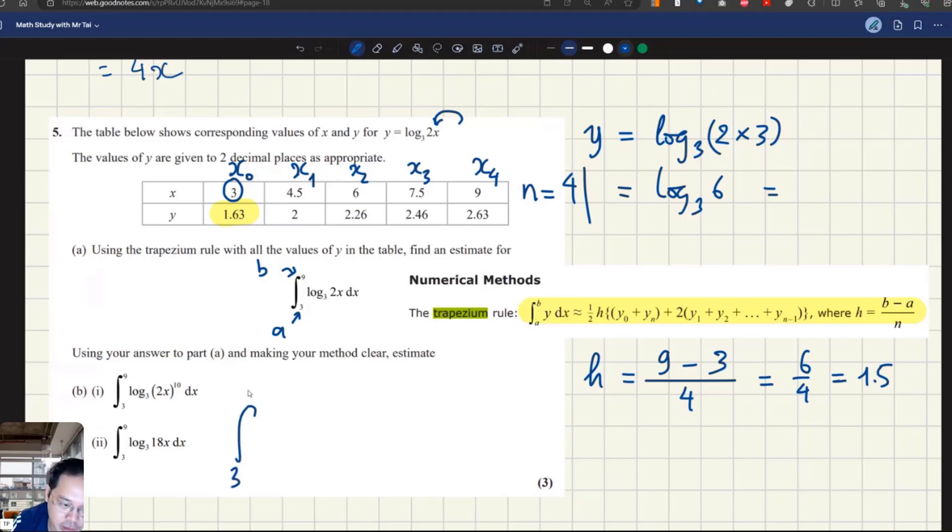Now applying the rule, the integration from 3 to 9 of the function logarithmic base 3 of 2x dx equals one half, one half h which is 1.5 that we just calculated, and then multiply with the sum of these terms.